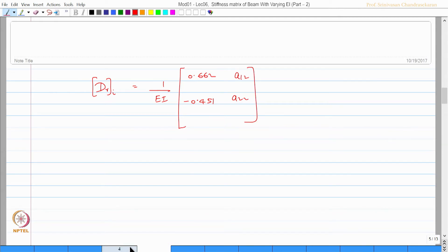So to get this, I should again do the same exercise by applying unit moment at the k-th end. So let us do that. This is by M by EI. I want to apply unit moment anticlockwise here.